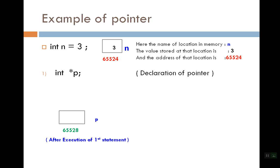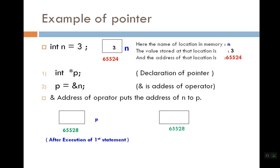After that, the next statement is executed: p is equal to &n. Here &n is the address-of operator. So what we learn is that the address of n will be stored in p. So after this statement is executed, the background process will show that the p pointer holds the address of our variable n, which is 65524.